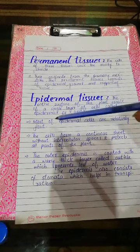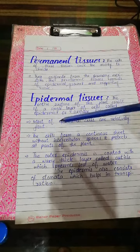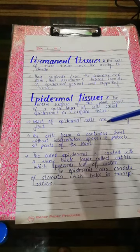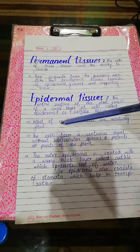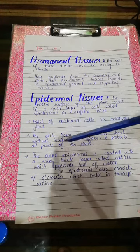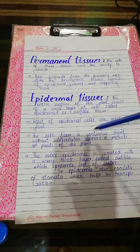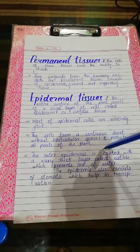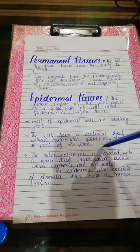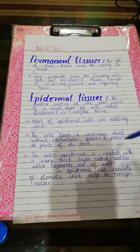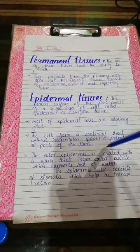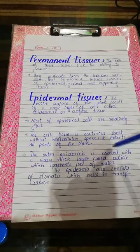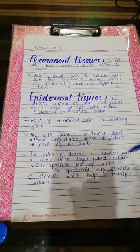The epidermis tissue is called epidermis and it forms the external boundary of the plant body. Most of the epidermal cells are relatively flat. The cells form a continuous sheet without intercellular spaces — they are compact and firmly joined to each other. It protects all parts of the plant.